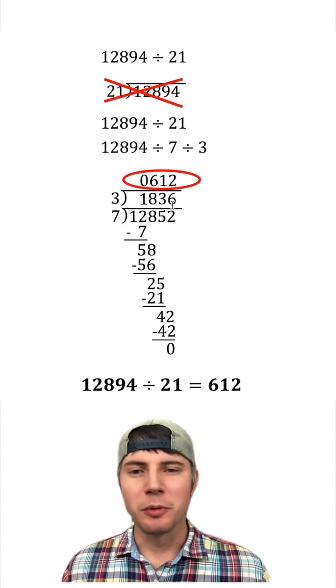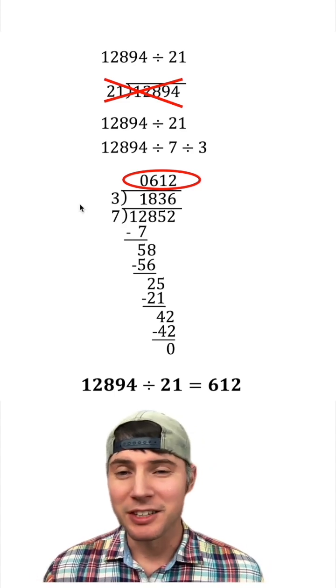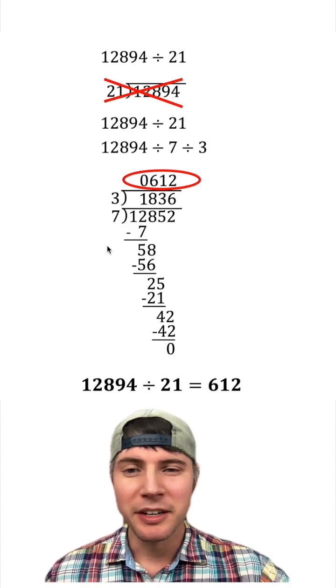12,894 divided by 21 is equal to 612. This method, commonly called the double-decker method, made it a little bit easier.